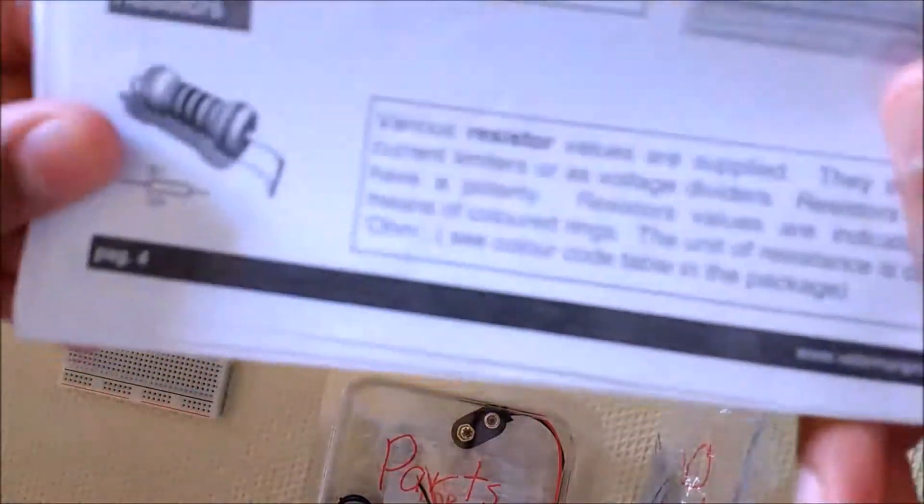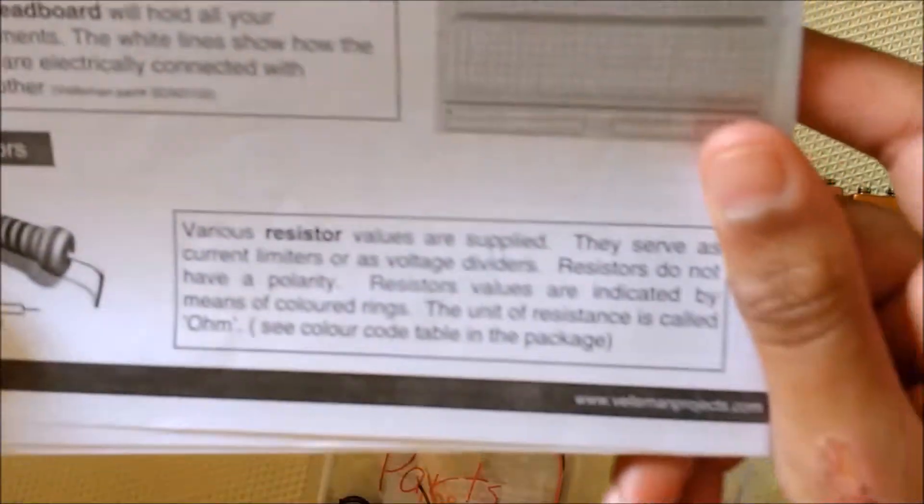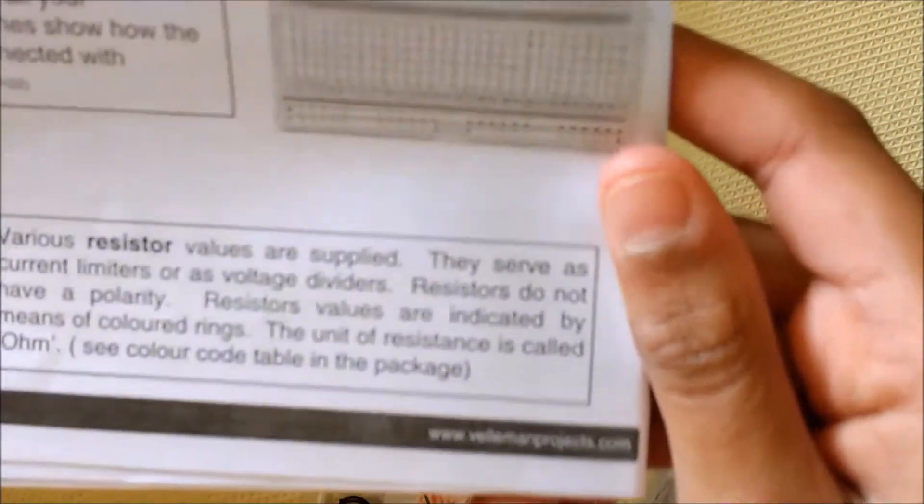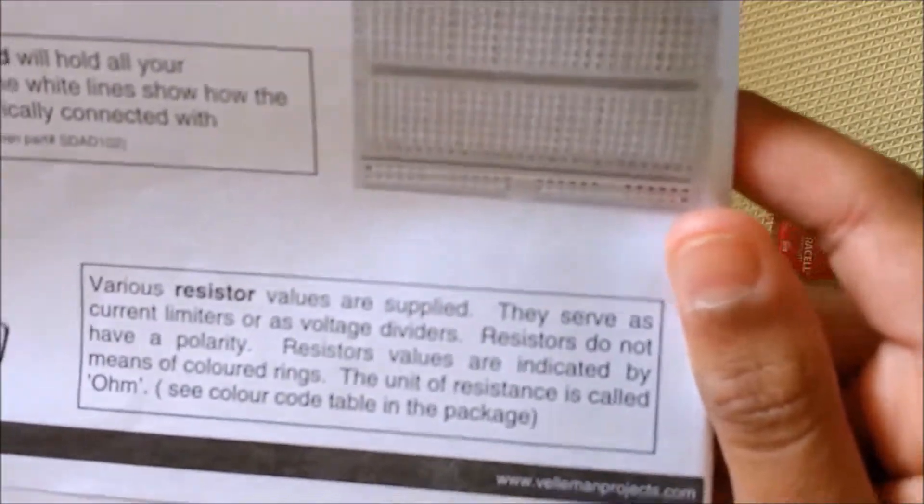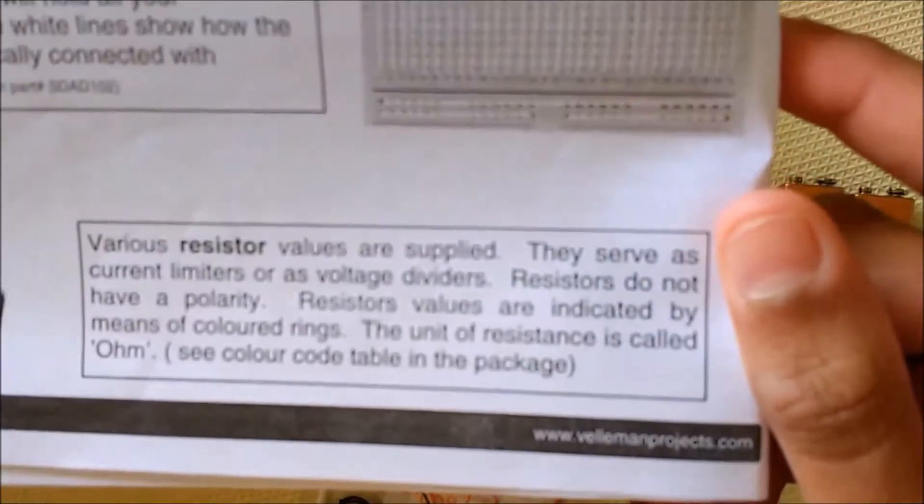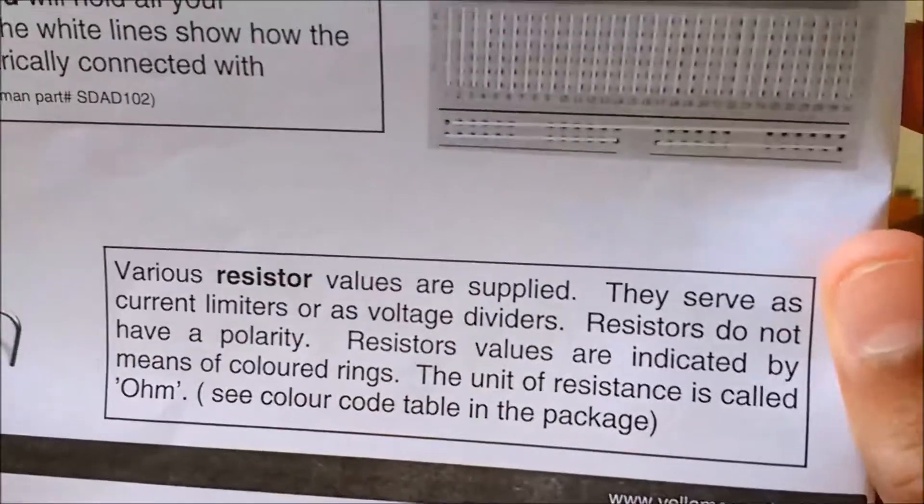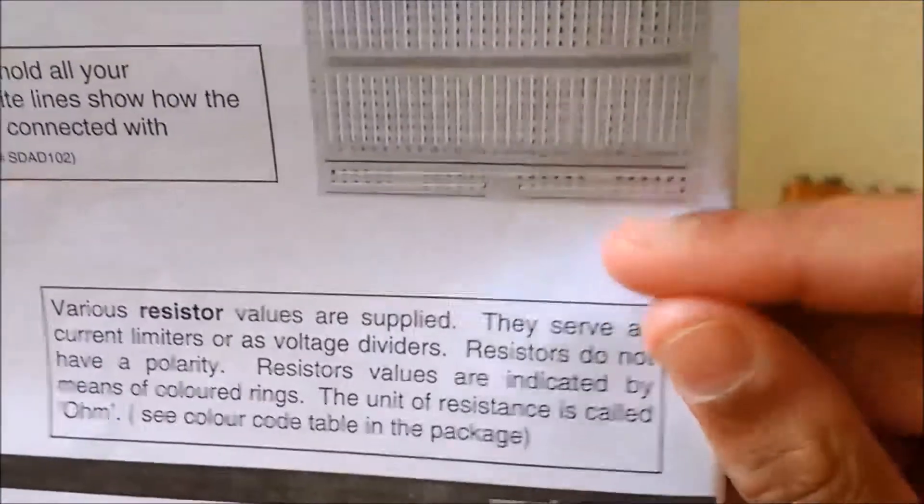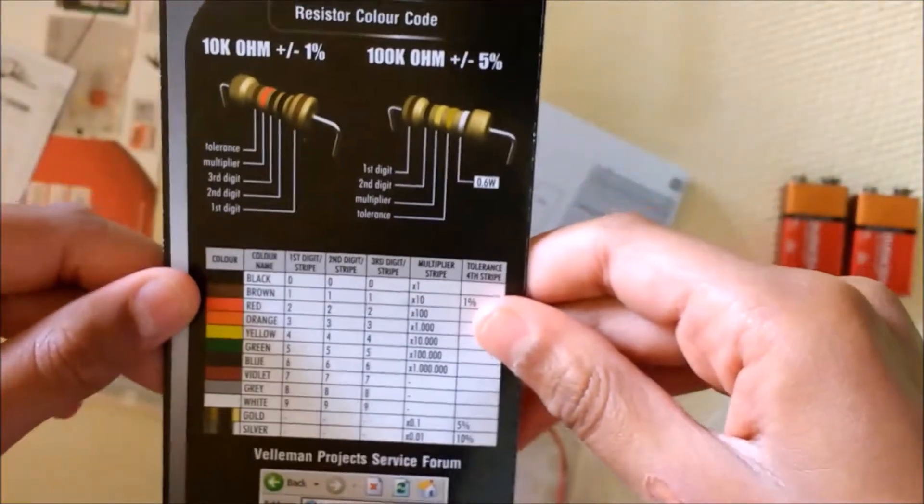Second part is resistors. It says various resistor values are supplied, they serve as current limiters or as voltage dividers. Resistors do not have a polarity. Resistor values are indicated by means of colorings. The unit of resistance is called ohm. See color code table in the package.